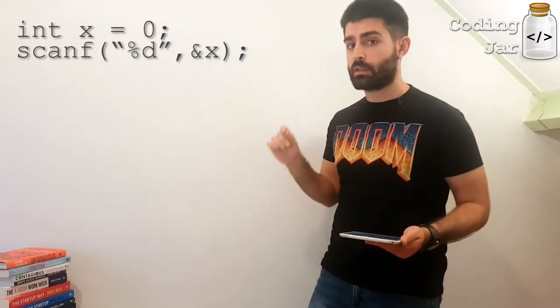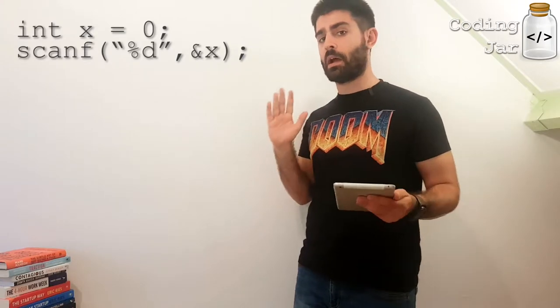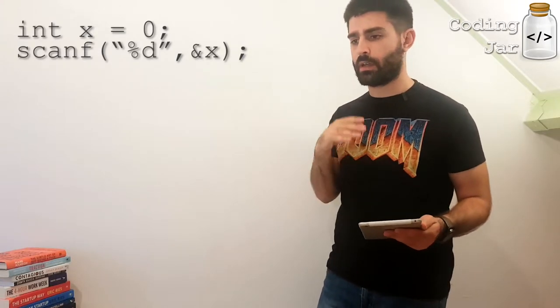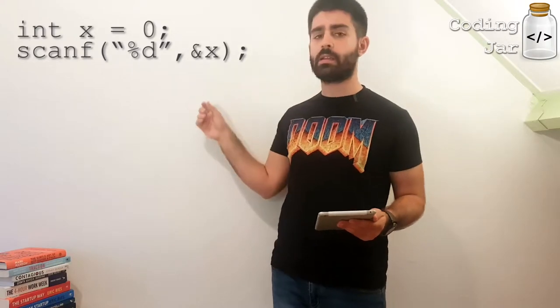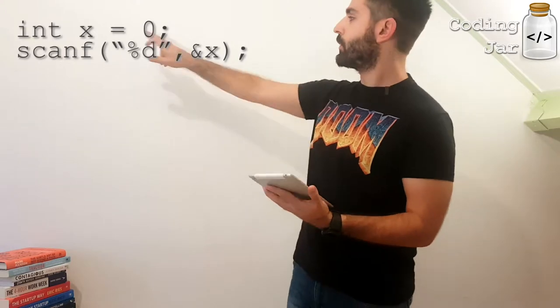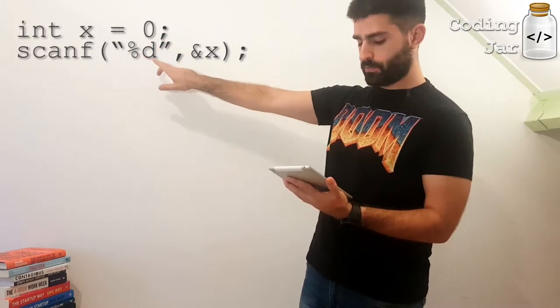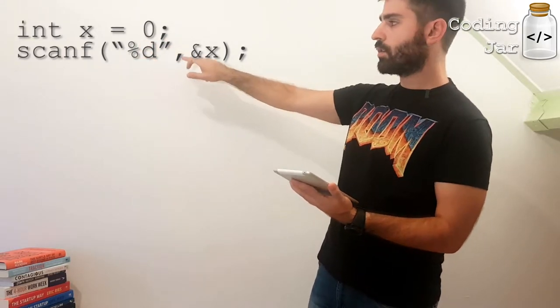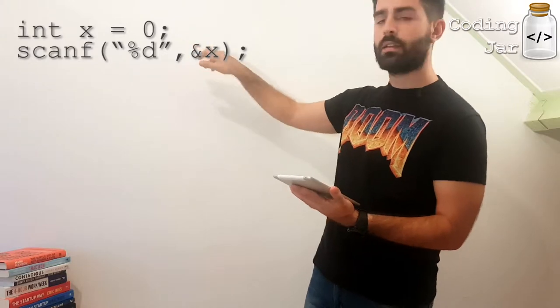Int x equals 0. Always instantiate and start your variables with a value because otherwise undefined stuff may happen and you don't want this. You cannot really know what will be inside your variable if you don't start it with a value. Then we go scanf %d, ampersand x.